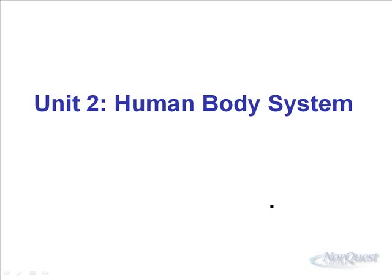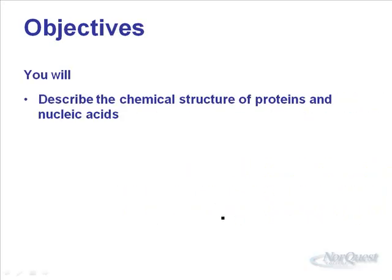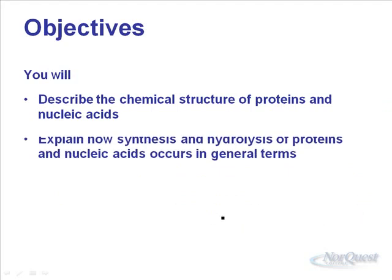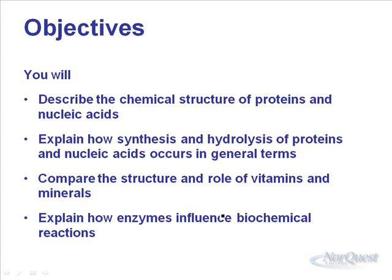Welcome back to Bio3D Prep as we continue through the digestive system. More on macromolecules — in this lecture we'll be looking at proteins and nucleic acids. Same reading as from the last lecture, pages 200 to 216. By the end of this lecture, you'll be able to describe the chemical structure of proteins and nucleic acids, explain how synthesis and hydrolysis occurs in general terms, compare the structure and role of vitamins and minerals, and explain how enzymes influence biochemical reactions.